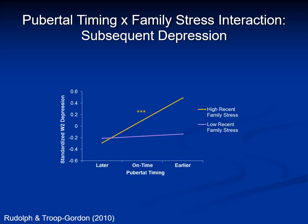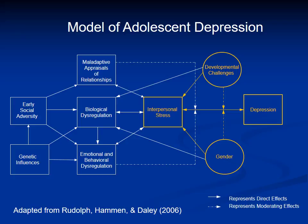Similar to the pattern for peer stress, looking at family stress — the yellow line is high recent family stress and the purple is low recent family stress — we found that earlier pubertal timing predicted higher levels of subsequent depression in both girls and boys exposed to high but not low levels of family stress. These findings suggest that puberty and interpersonal stress work together to increase risk for depression. The pattern for girls was consistent in that early maturation poses a risk, but the findings for boys were more mixed.